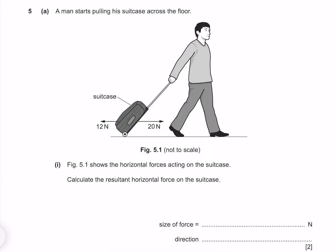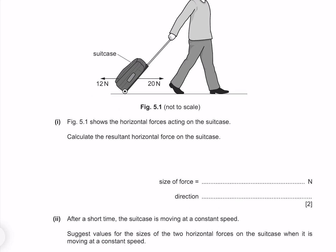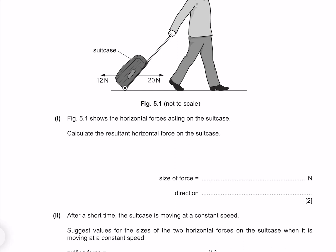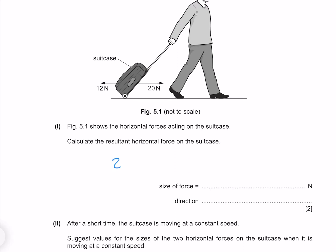A man starts pulling his suitcase across the floor. Figure 5.1 shows the horizontal forces acting on the suitcase. Calculate the resultant horizontal force on the suitcase. Our resultant force is the difference between the forces, which is our 20 newtons minus 12 newtons, which gives us 8 newtons. And because our forwards force is larger, our direction is going to be forwards.